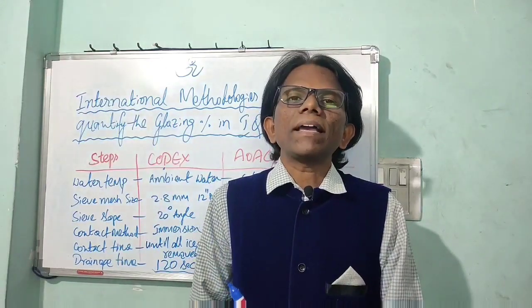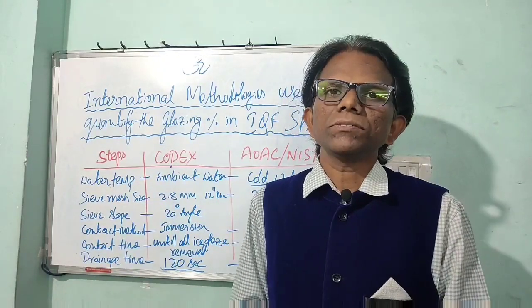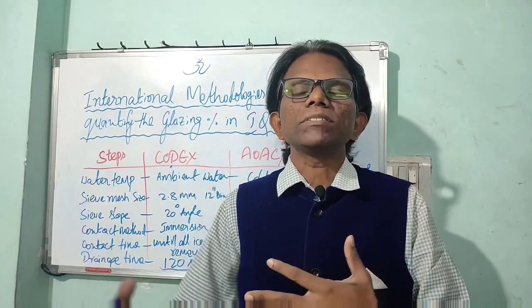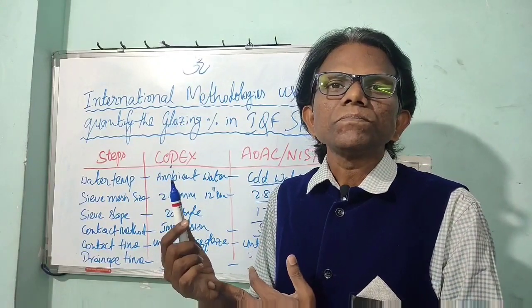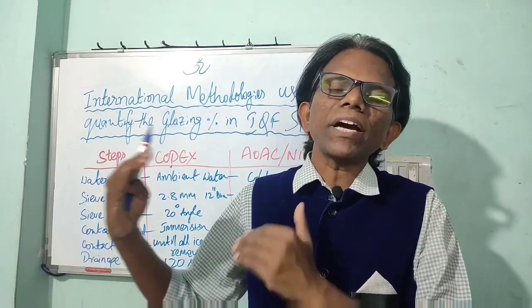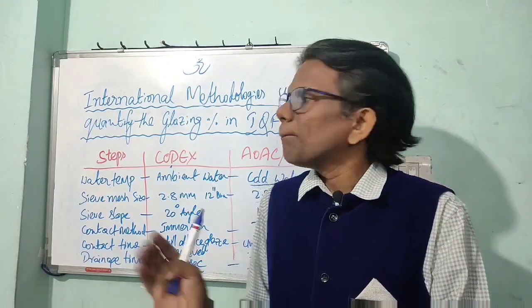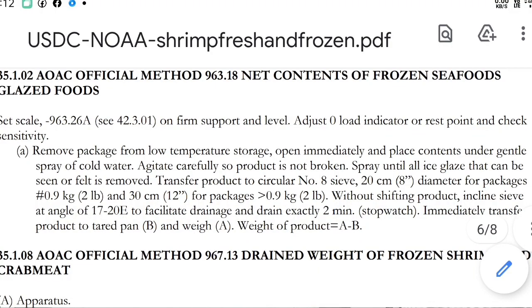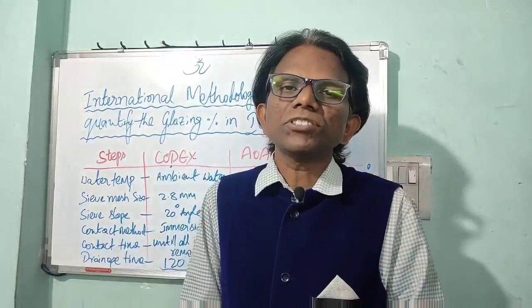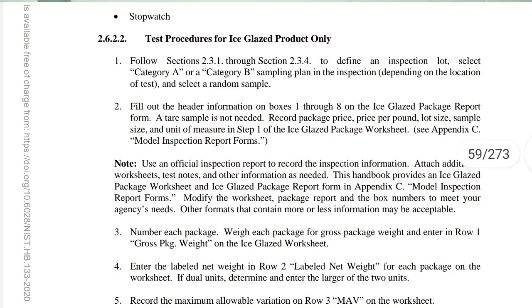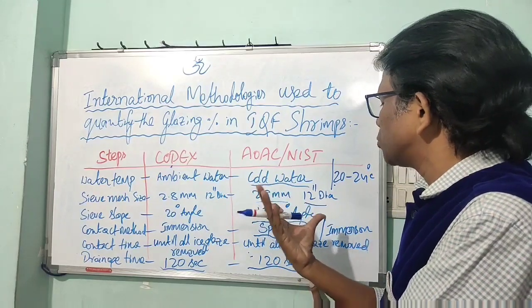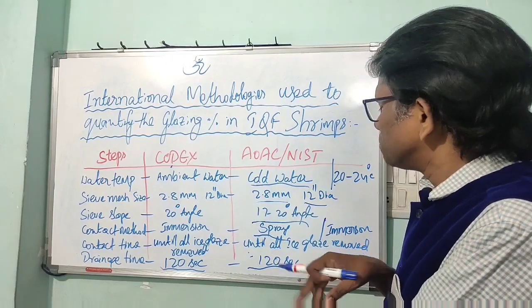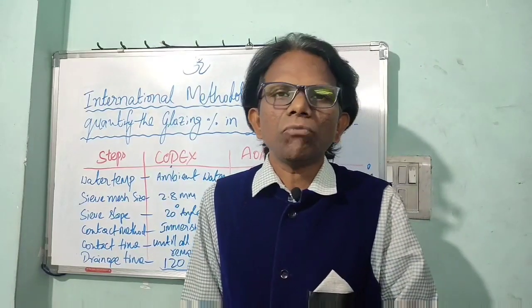Based on these international methods, we can validate our internal procedures. If the AOAC method says cold water spray, we can modify it as per our convenience and validate the modified method by comparison. In India, most factories follow a water temperature of 20 to 24 degrees centigrade for deglazing shrimps, using a 12-inch round plastic drain mesh. A 20-degree slanting angle is maintained, and a spray method can be used to minimize water wastage.